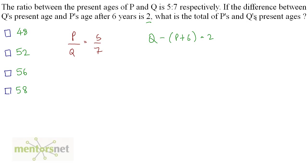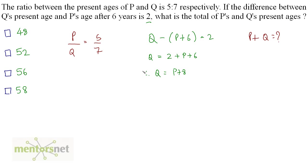We have been asked what is the total of P and Q's present ages, so we need to find P plus Q. Rearranging, Q is equal to 2 plus P plus 6, therefore Q is equal to P plus 8. Now putting this value of Q in the ratio equation, we get P by P plus 8 is equal to 5 by 7.